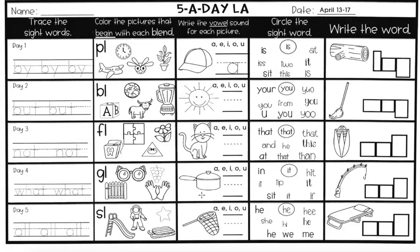This is a pot — write what vowel you hear in the middle of 'pot.' The sight word circled in this box is I-T — 'it.' Find three more 'it' words and circle them. On this one, write the word for the picture — it is a fishing rod. Write what you hear using the shape boxes.